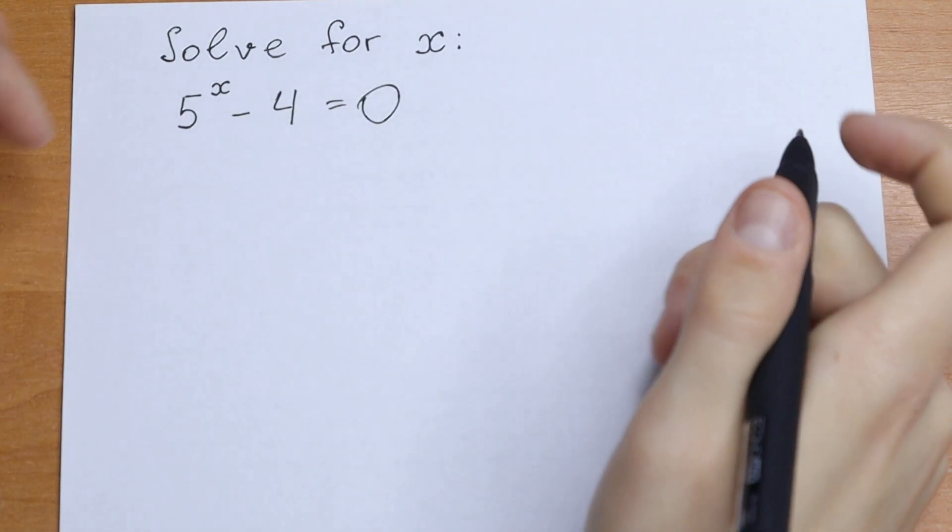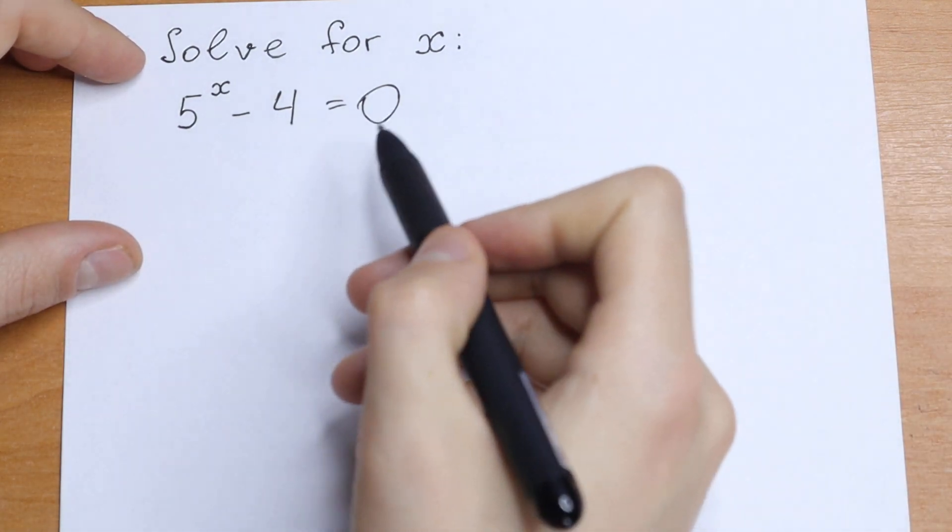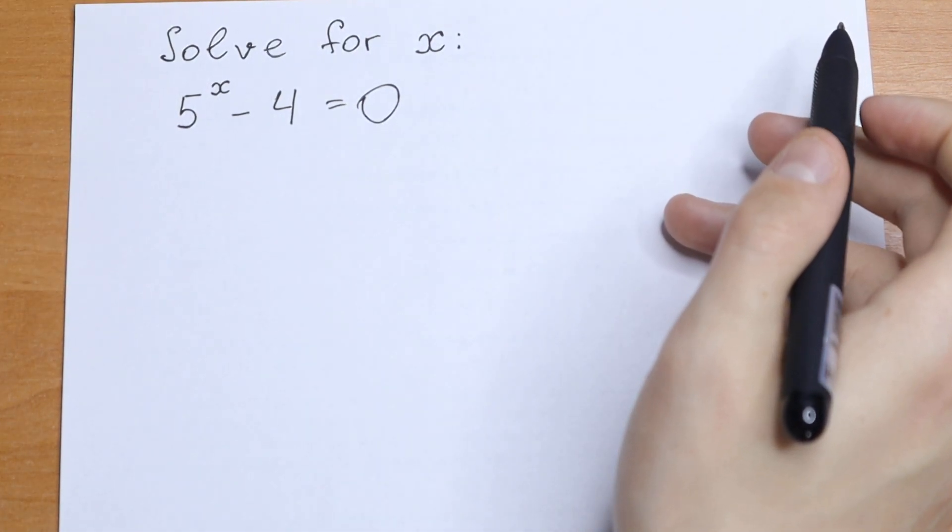Hello everyone, welcome back to MathMove. Today we have an interesting, tricky equation, because we have 5 to the power x minus 4 equal to 0. So this is an exponential equation.